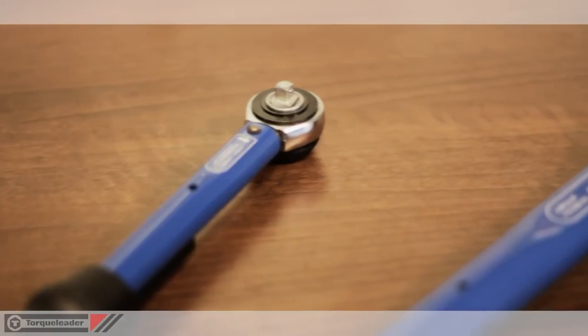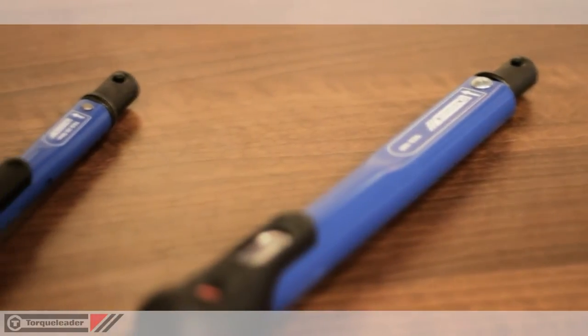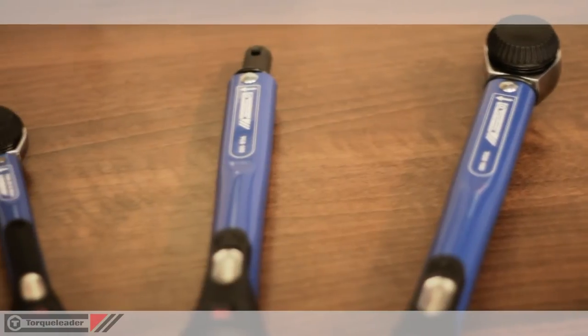This video shows the TCR and TCS ranges of calibrated scale clicker wrenches. The TCR and TCS models are general purpose torque tools.